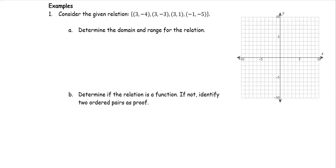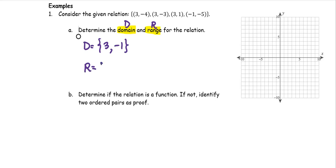In part A, we are going to determine the domain and range for that relation. We use the notation D to represent the domain and R to represent the range. The domain is the set of the first coordinates, which are 3 and negative 1. The range is the set of the second coordinates, which are negative 4, negative 3, 1, and negative 5.